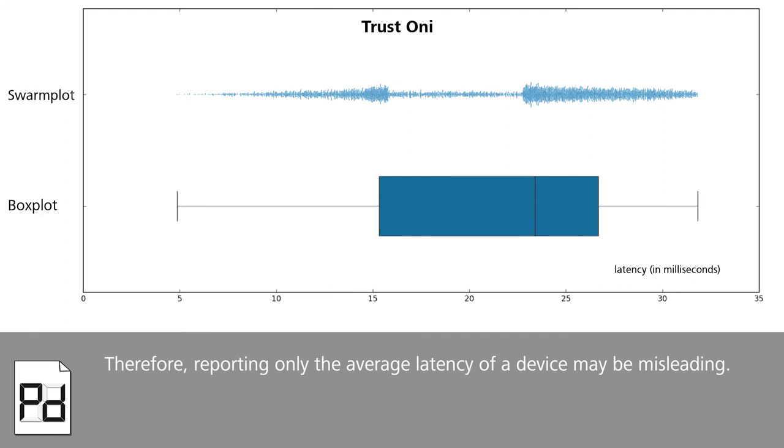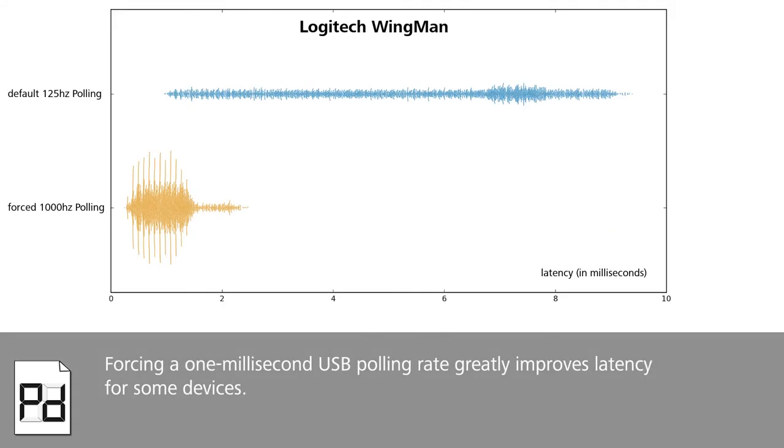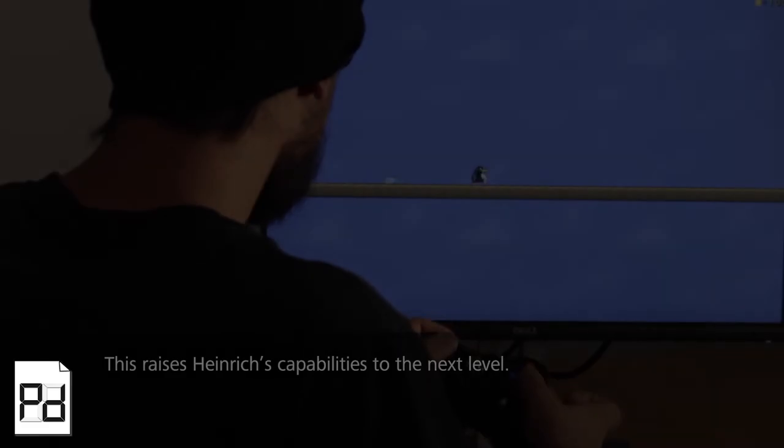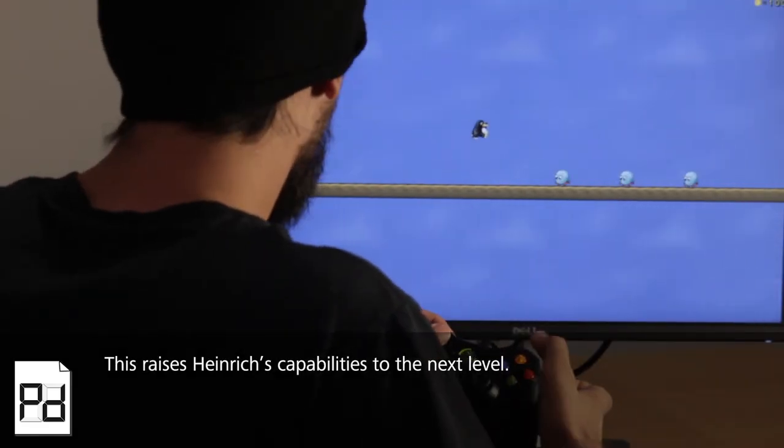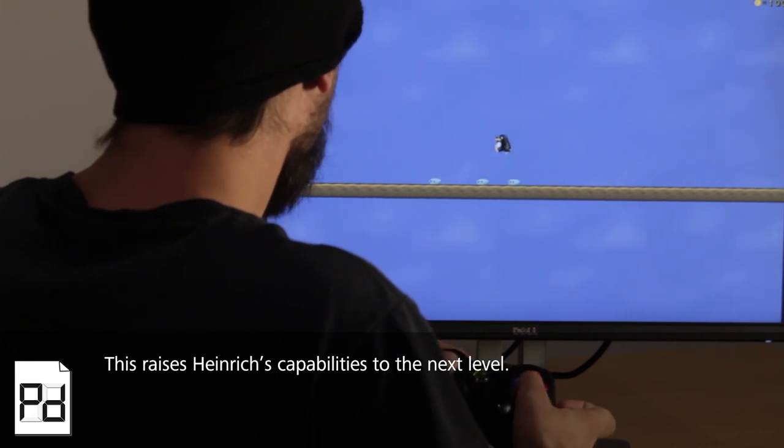Therefore, reporting only the average latency of a device may be misleading. Forcing a 1ms USB polling rate greatly improves latency for some devices. This raises Heinrich's capabilities to the next level.